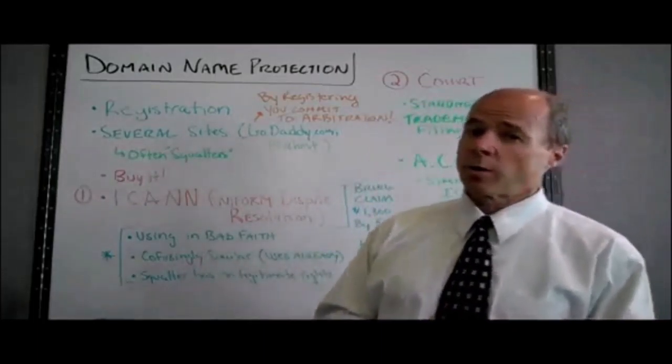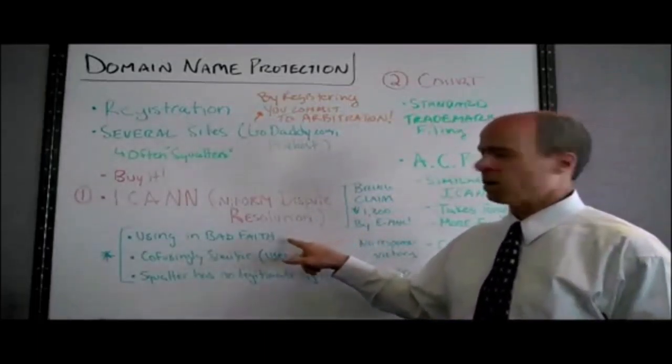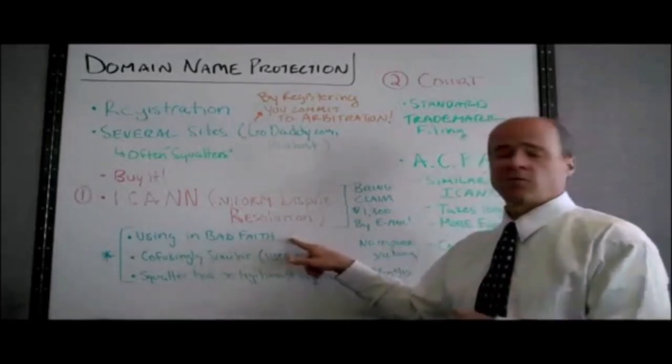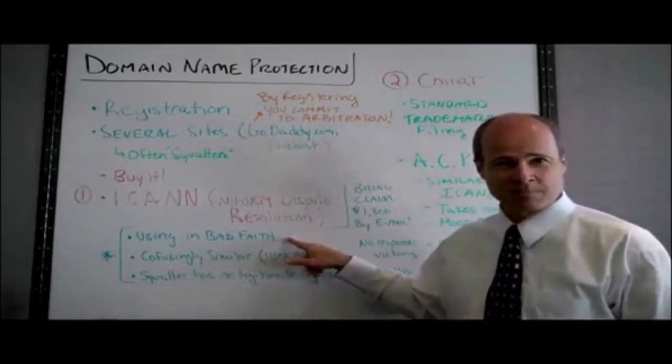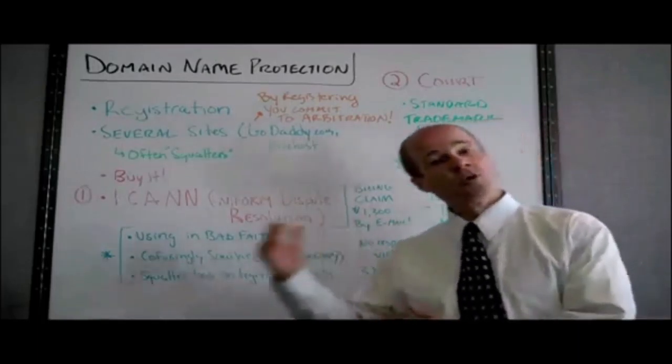There are three requirements for you to win. They must be using the name in bad faith. For example, if they're asking $40,000 and they're not using the name, that's evidence of bad faith. Or if they're trying to prevent you from using the name.